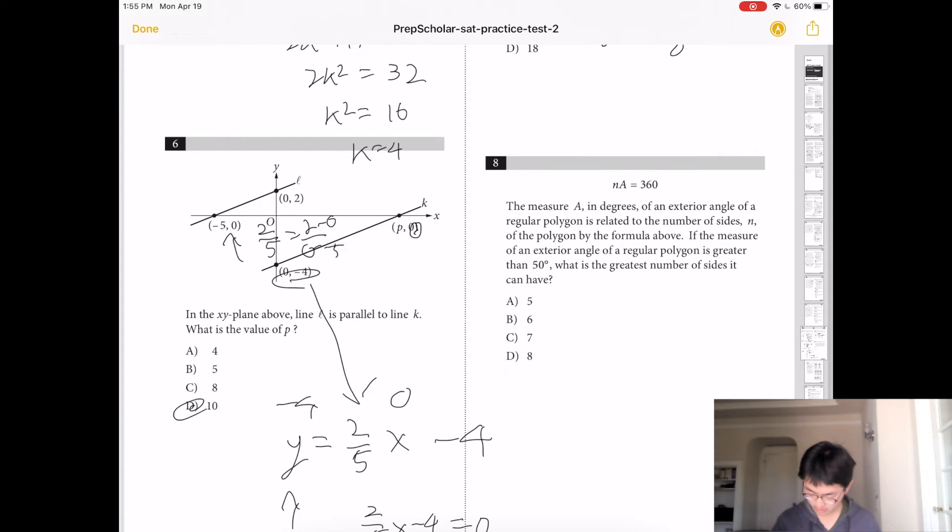The measure a, this measure of exterior is greater than 50 degrees. What is the number of sides it can have? So it's 50 or greater times n equals 360. And since we can't have 7.2 sides, we gotta round down to 7.